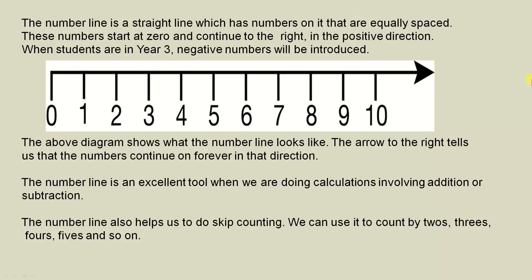The number line is a straight line which has numbers on it that are equally spaced. These numbers start at zero and continue to the right in the positive direction. When students are in Year 3, negative numbers will be introduced, but just for now we'll work with the positive numbers to the right of zero.